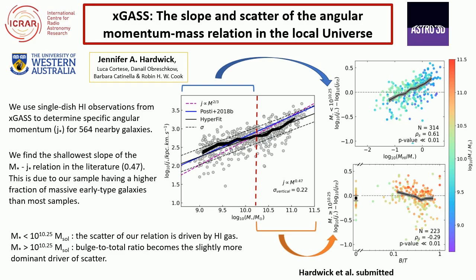For low stellar masses — galaxies with a stellar mass less than 10^10.25 solar masses — the dominant driver of scatter was H1 gas fraction, shown in the plot in the top right panel. You can see the offset of each galaxy's specific angular momentum from what was predicted by the best fit relation, and there is a quite strong correlation between the H1 gas fraction and this offset.